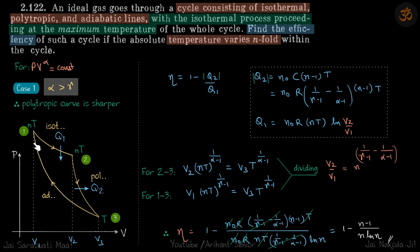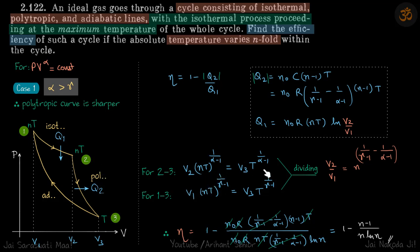Now let's find the value of v2/v1. For that, we use the adiabatic process to relate v1 and v3, and the polytropic process to relate v2 and v3. From those two relations we can get the relation between v1 and v2. For the process 2 to 3, which is the polytropic process, V·T raised to power 1/(α-1) is constant. We write this for points 2 and 3.